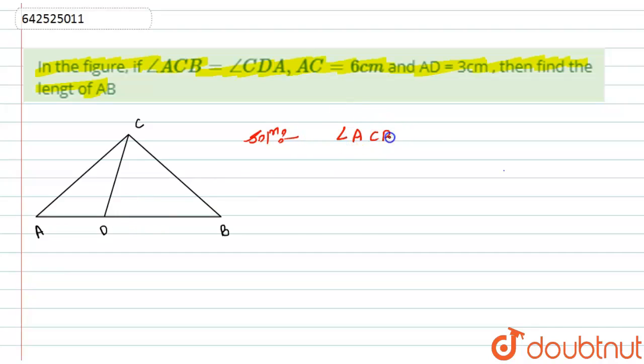And what more things are given to us? We have given here the length of AC as 6 centimeters and length of AD as 3 centimeters. Now what is to find here? We have to find the length of AB, means this one.